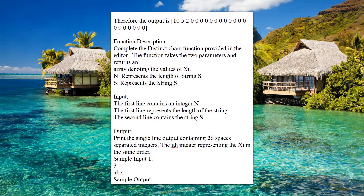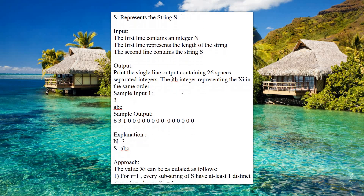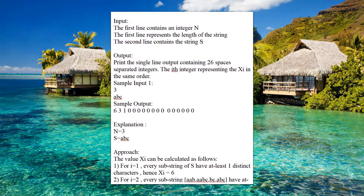The function description: the main function will be given and you need to complete the function called 'distinctCharacters', which takes two parameters — n, representing the length of the string, and s, representing the string of characters. The input is: first line contains integer n, second line contains the string s. The output is a single line of 26 space-separated integers representing xi in order.